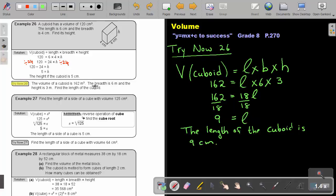So basically that was number 26. Let's go on with example 27. Find the length of a side of a cube with the volume. Remember, you can always highlight that or underline. It's a cube now.